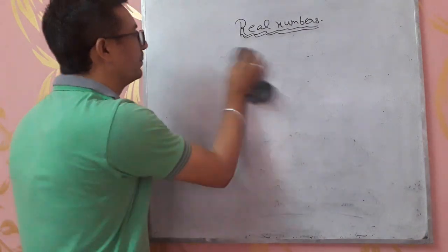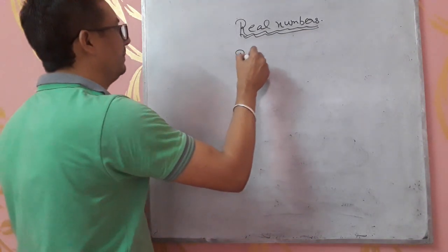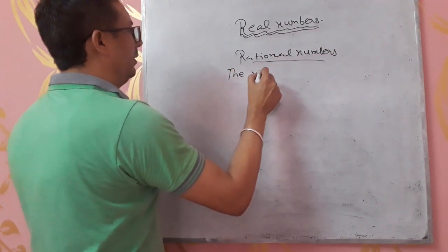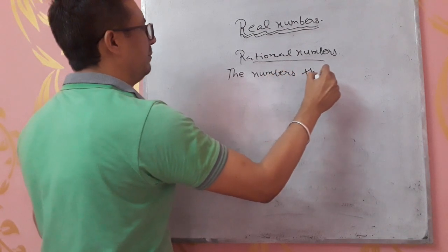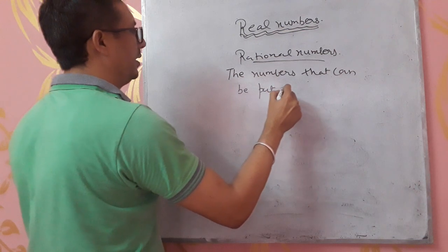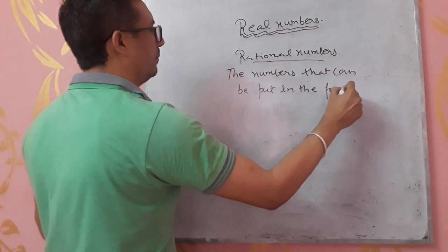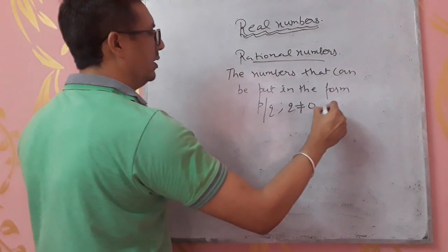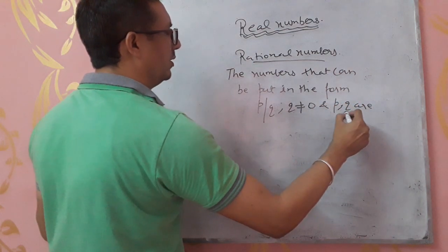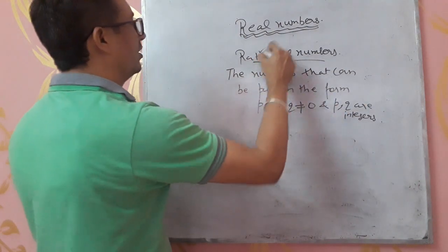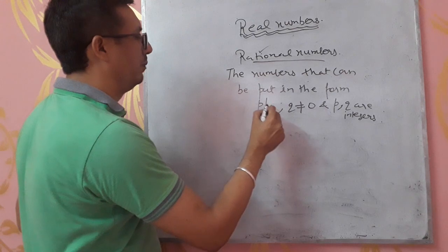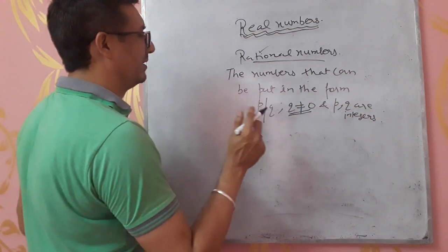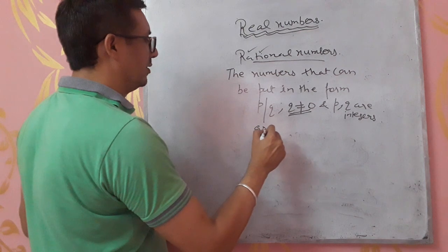Next, we are going to study Rational Numbers. Rational numbers are the numbers that can be put in the form P by Q, where Q is not equal to 0 and P and Q are both integers. These are rational numbers.